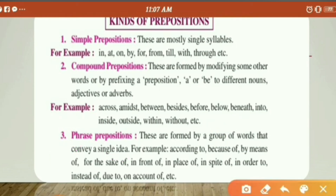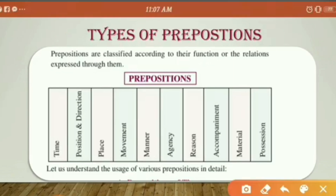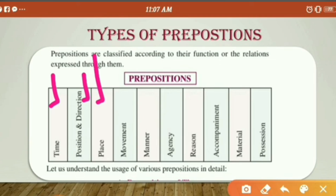So we have done three types of prepositions: simple prepositions, compound prepositions, and phrase prepositions. Now we have another type of classification. If the prepositions tell about the time of action, they are prepositions of time. If they tell about position or direction, they are prepositions of position and direction. If there is any movement, that movement is shown with special prepositions — prepositions of movement. Prepositions of manner tell about the manner in which an action is being taken.